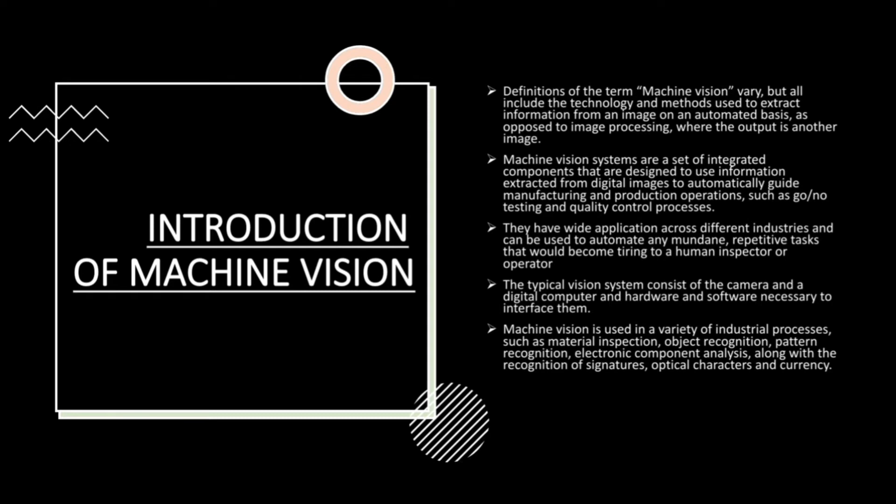A typical machine vision system consists of a camera, a digital computer, and hardware and software necessary to interface them. These systems are used in a variety of industrial processes such as material inspection, object recognition, pattern recognition, electronic component analysis, along with the recognition of signatures, optical characters, and currency.